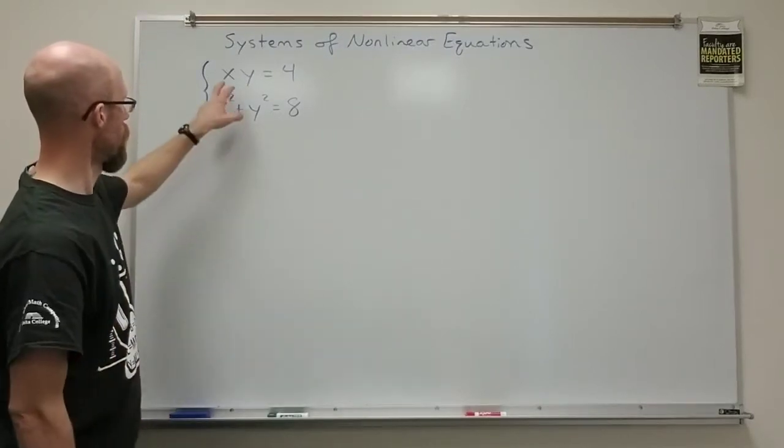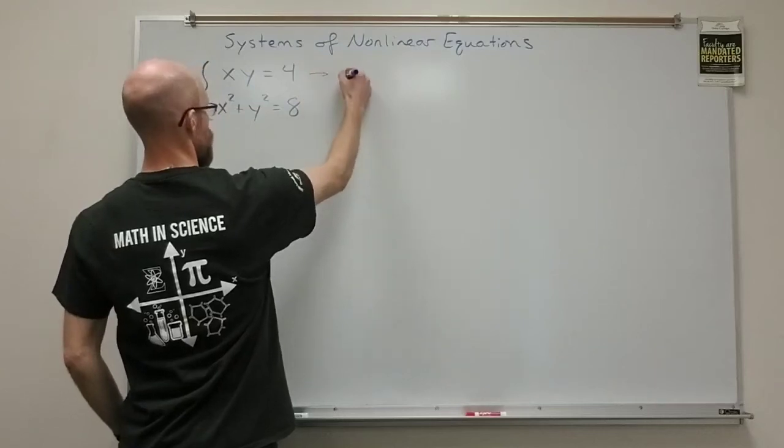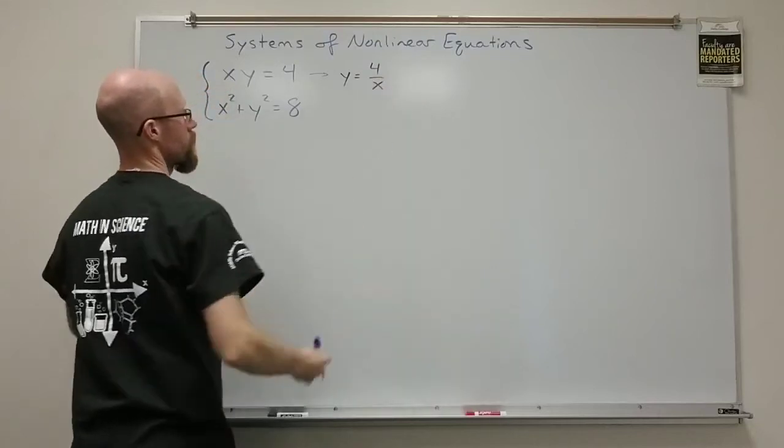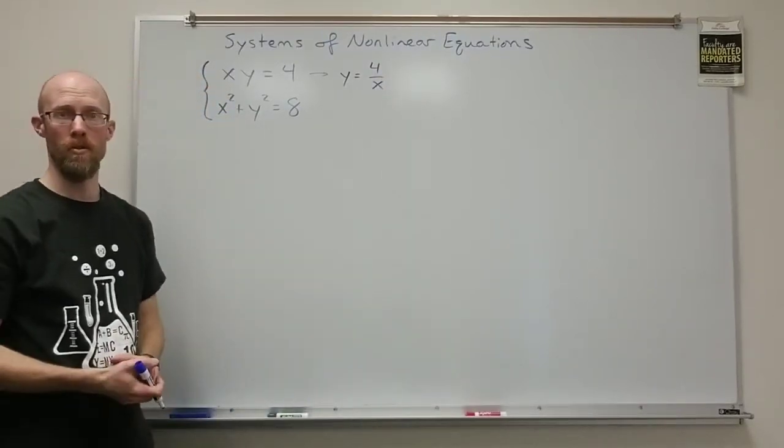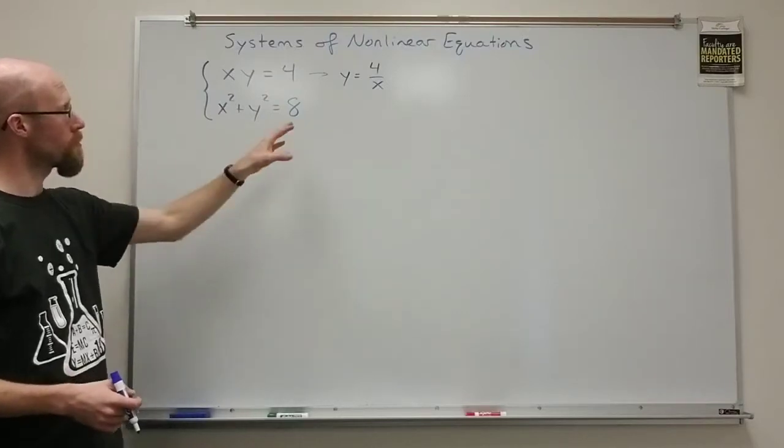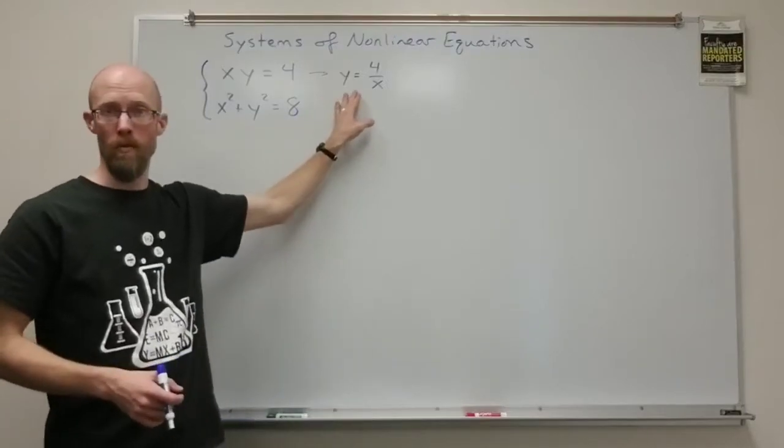On this top one, I can solve for y by dividing both sides by x. I get y equals 4 over x. And 4 over x ends up being a graph we've seen before. That's a rational function. It's actually a reciprocal function.